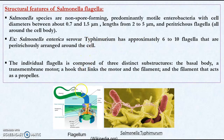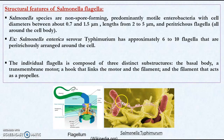Coming to the structure of the individual flagellum — each flagellum is composed of three distinct substructures. As shown in this diagram, the first is the basal body and the transmembrane motor, the second is a hook that links the motor and the filament, and the last is the filament itself. This diagram is an electron microscope image of Salmonella Typhimurium harboring human cells, where we can see the flagella around the rod-shaped bacterium.